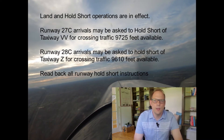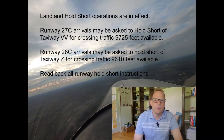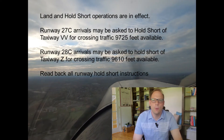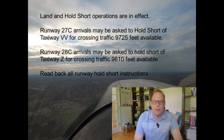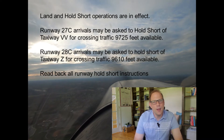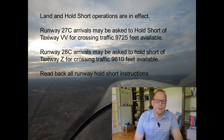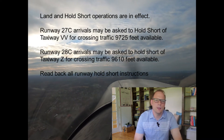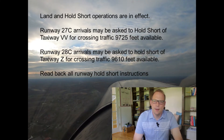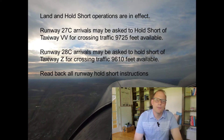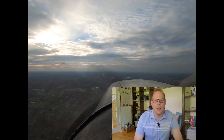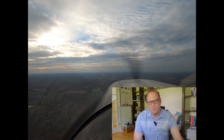On the ATIS, we hear them say LASSO is in effect. They tell you what arrivals can be expected to hold short and why — in this case, holding short of a taxiway for crossing traffic. The ATIS then provides the landing distance available to the LASSO hold point: 9,725 feet or 9,610 feet. As captain of the mighty Cessna 150, you need to decide if you can stop your aircraft in just over 9,500 feet.